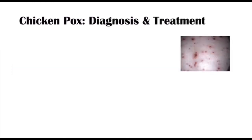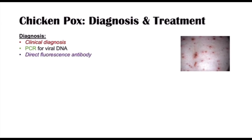The diagnosis of chickenpox is often a clinical diagnosis — we see children exposed to other children with similar vesicles in different stages of healing. Other ways of diagnosing chickenpox include polymerase chain reaction (PCR) to detect viral DNA, direct fluorescence antibody testing, and serologies to assess immunity. For example, you can detect immunoglobulin G against varicella zoster virus, which indicates exposure to chickenpox or receipt of a vaccine, helping determine immunity.